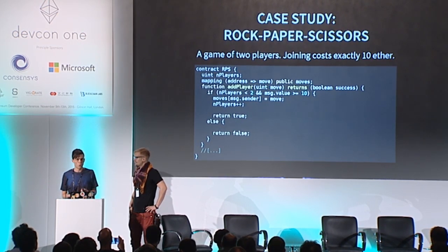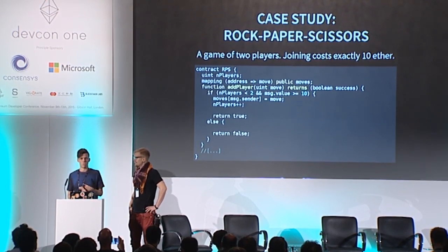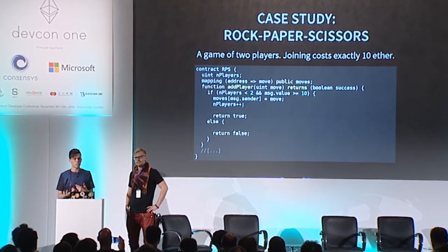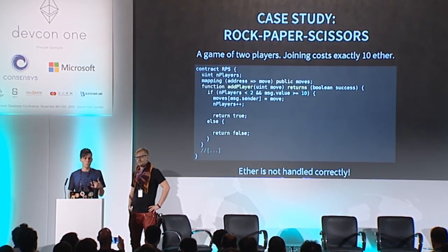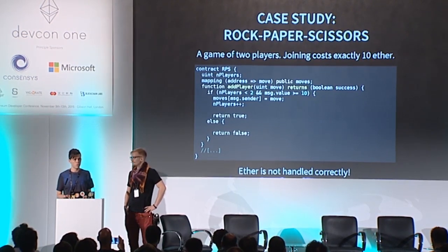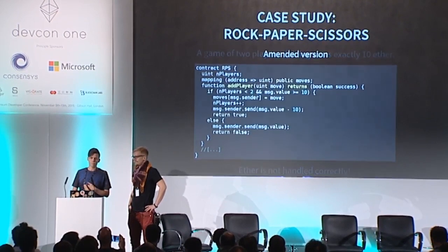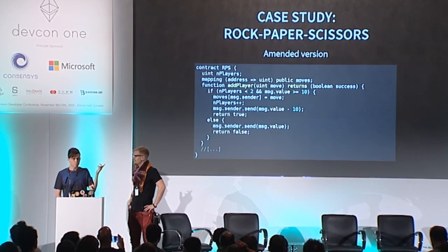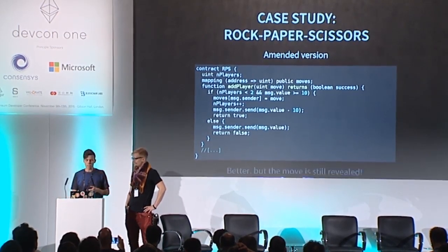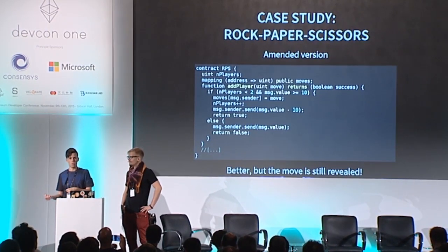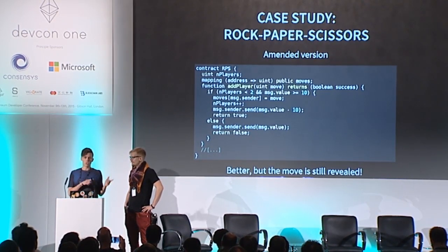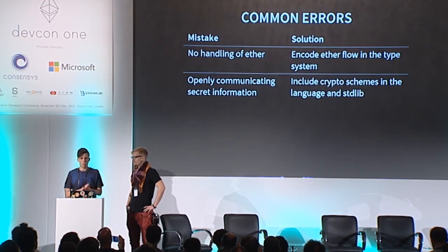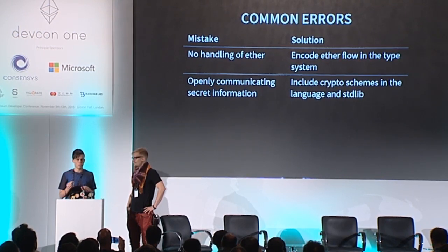For a regular programmer this would seem quite reasonable, but there are actually a few bugs here. What happens if a third player attempts to join the game? He would lose all his ether and there's no way to retrieve it. Let's fix this — this is better, but there is one problem left: since the blockchain is transparent, the first player will reveal his move to the second player. We won't solve this now, but keep it in mind for later.